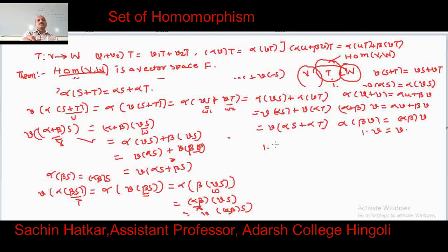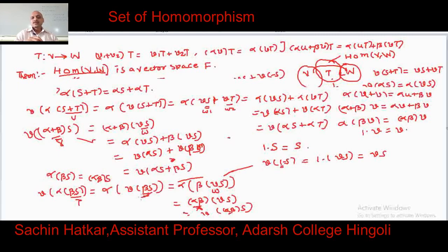Fourth condition: 1·S(V) = 1·S(V) = S(V), since 1 is a scalar. Therefore the set of homomorphisms from vector space V into vector space W satisfies all conditions of a vector space and hence it is a vector space.